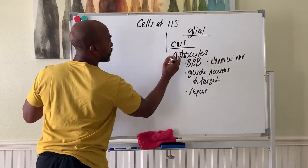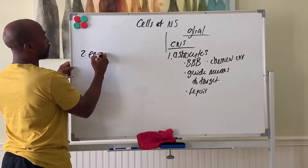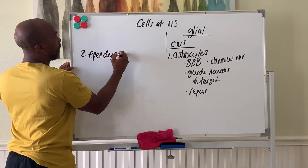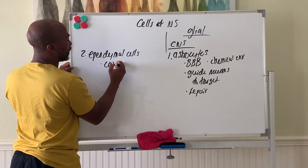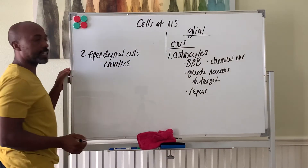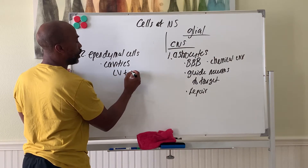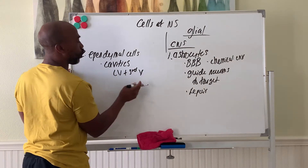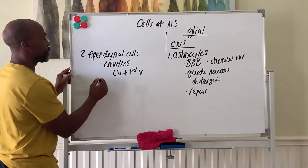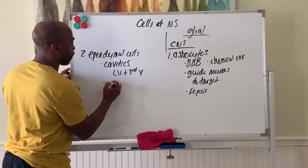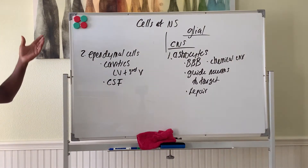The second CNS glial cell type is ependymal cells. Ependymal cells are found in the cavities of the brain — such as the lateral ventricle, third ventricle, and fourth ventricle. These cavities are lined by ependymal cells, which are also involved in making CSF (cerebrospinal fluid).